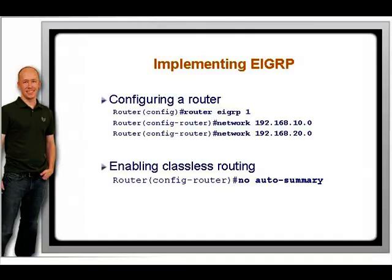Because the exam focuses heavily on troubleshooting, make sure you always check that the autonomous numbers match in the exam scenarios. This example shows how to configure EIGRP for a router connected to networks 192.168.10.0/24 and 192.168.20.0/24. The autonomous system number is 1 and is specified when entering the routing process.